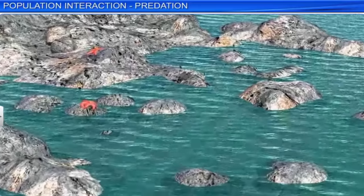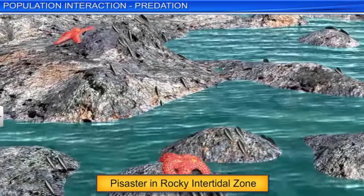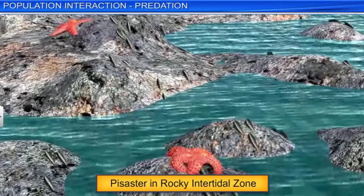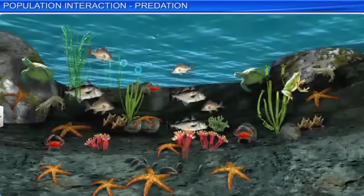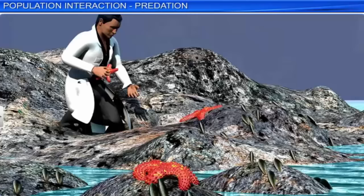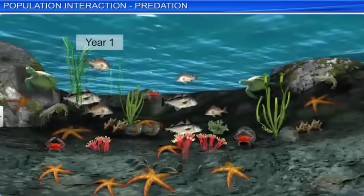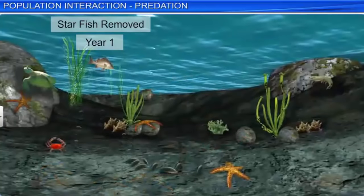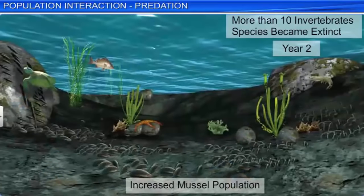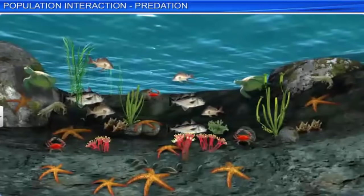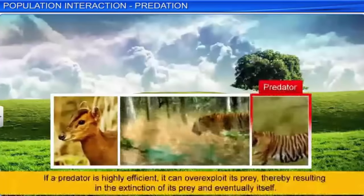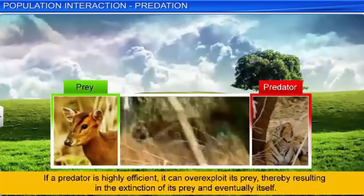For example, the introduction of a prickly pear cactus into Australia in the early 1920s created havoc as this plant spread rapidly into millions of hectares of rangeland. The spread was brought under control only after the introduction of a moth, Cactoblastis cactorum, a cactus-feeding predator from South America. Such biological control methods are also used to control agricultural pests. Another function of predators is to help maintain species diversity, thereby reducing the intensity of competition among competing prey species. For example, a starfish, Pisaster, is an important predator in the rocky intertidal communities on the American Pacific coast. It feeds on a mussel, Mytilus, and is responsible for maintaining the species diversity in intertidal communities.